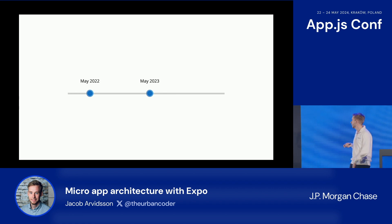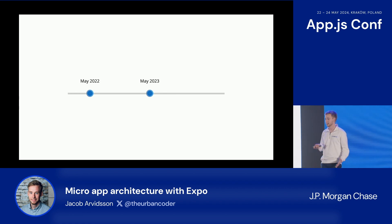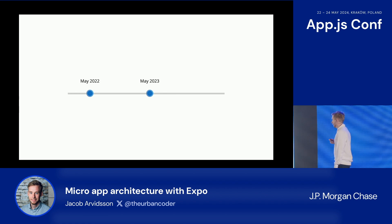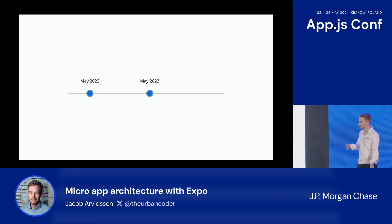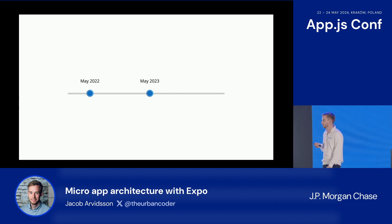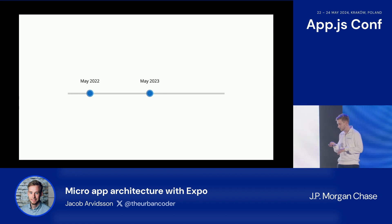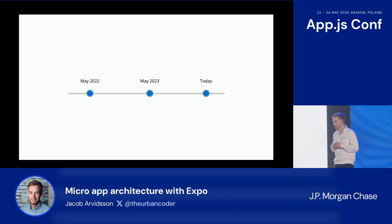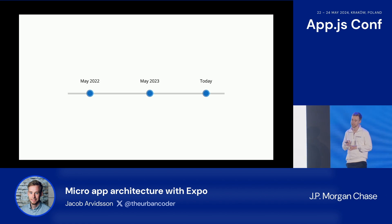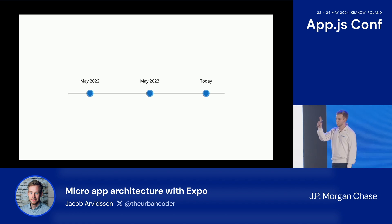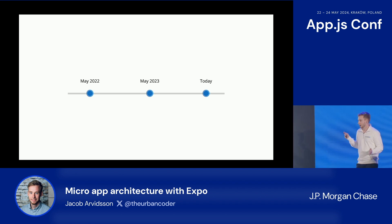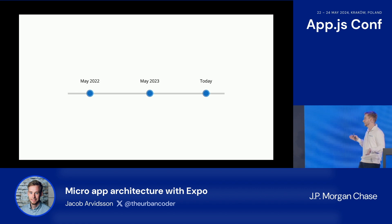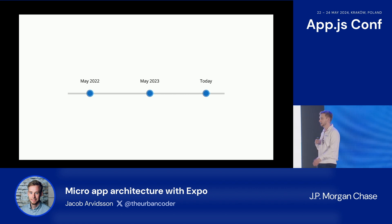I came back here last year, and at that point Chase had grown quite a lot — we had above a million users and had launched a few products. From our initial offering with a current account and linked debit card, we now had savings and linked investments. Today, we now have over two million users. What was once a small project is now 16 front-end teams with over 80 front-end engineers working together on one app.